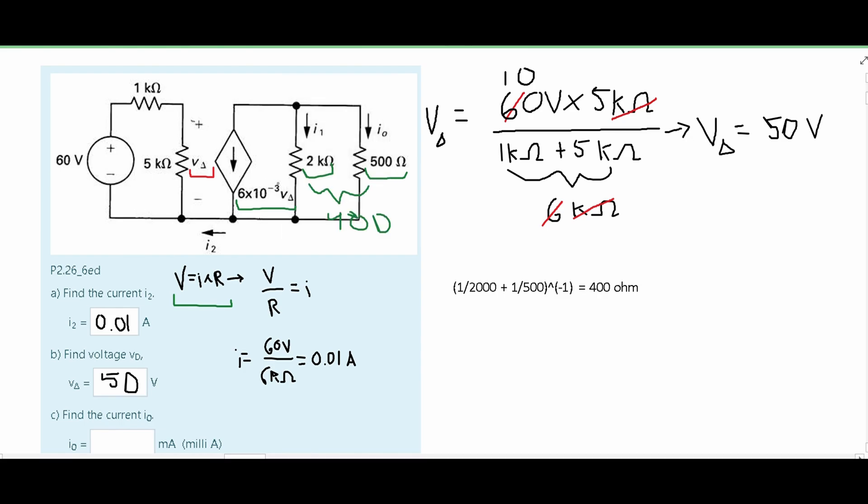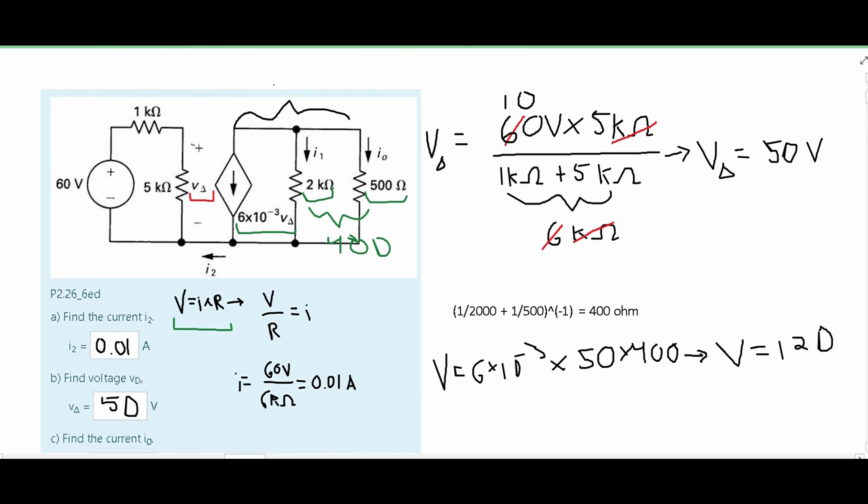Now all we need is the voltage going through this. Well, we're given the current just to the left right here. And we know the resistance, so we can calculate the voltage. We're going to say our voltage is equal to our current, and we know our current to be 6 times 10 to the negative cubed times V delta. And we just found our V delta to be 50, so we're going to have this in here. And then it's being multiplied by our resistance, which we just found also, to be 400 ohms. This diagonal can be a little bit confusing, the diagonal with the arrow in it, but what it means is current, and it's pointing in the direction of current flow. If we plug all this into a calculator, we are going to get that our voltage is equal to 120. So the voltage for this entire area is 120.